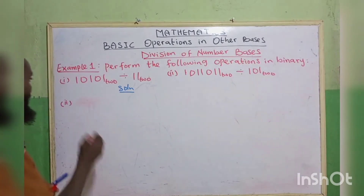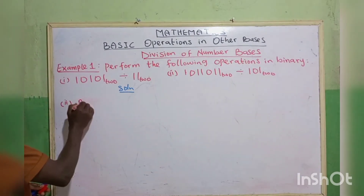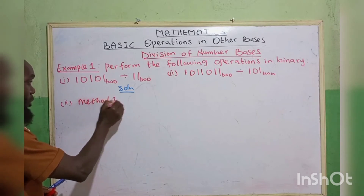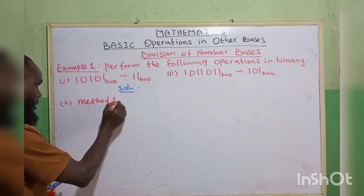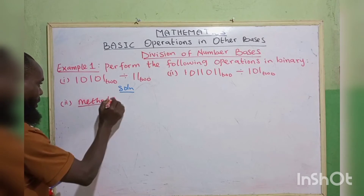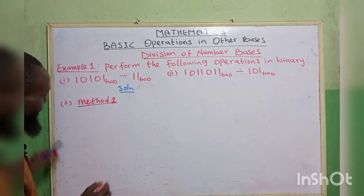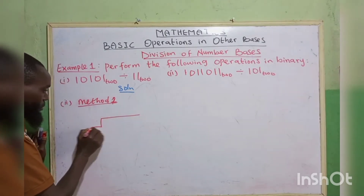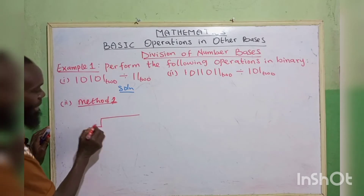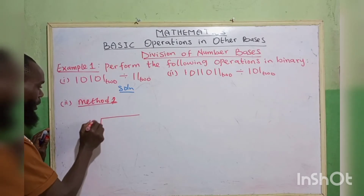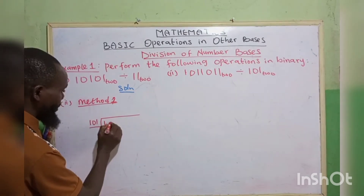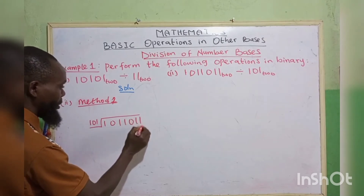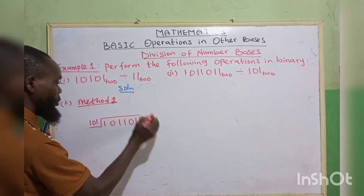Now let us try another example — we got Example 2. Let's use Method 1 first before considering Method 2. For the long division, we have 101 dividing 1011011 in base 2, don't forget.